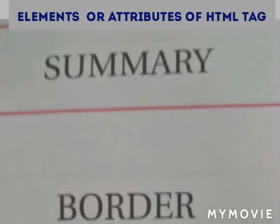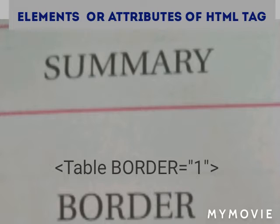The border specifies the width of a border around a table in pixels. If a border is required, its value is set to 0. For example, table border equals 1.